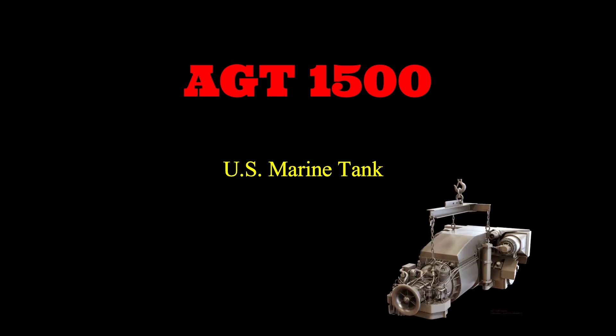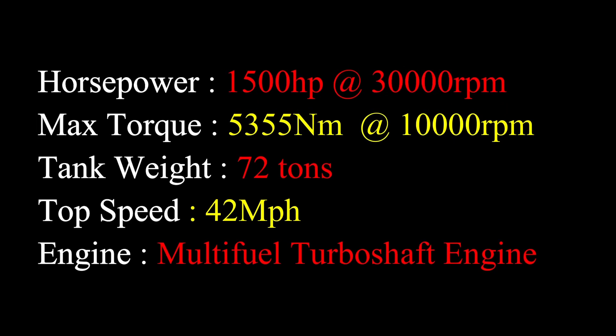The AGT 1500 is the US Marine tank engine with 1,500 horsepower at 30,000 RPM and a max torque of 5,355 Newton meters at 10,000 RPM. The tank weighs 72 tons and achieves a top speed of 42 miles per hour.